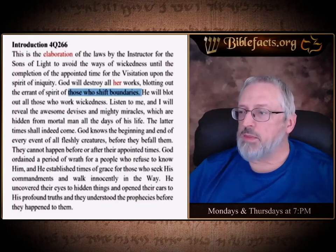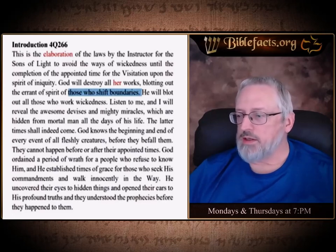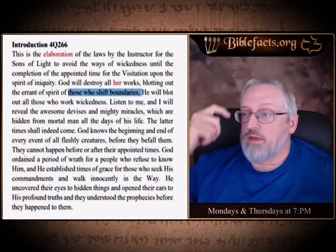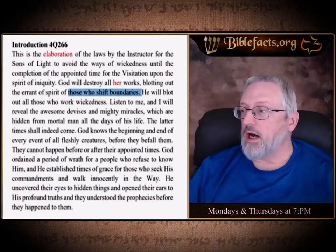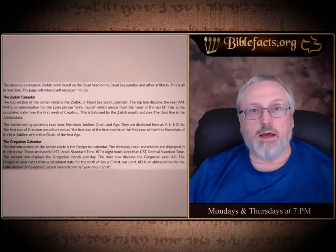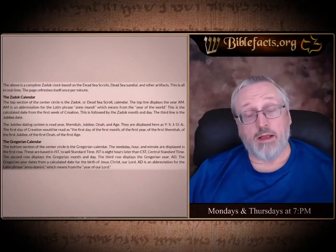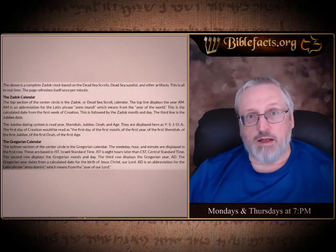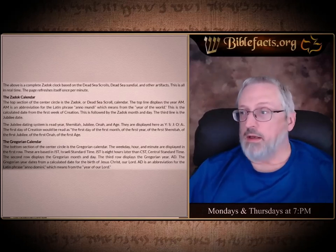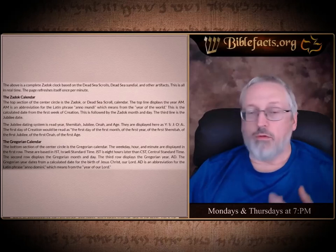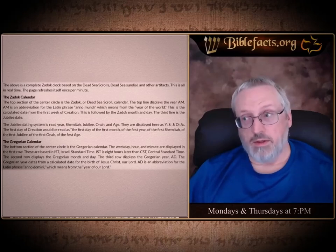The Zadok calendar, at the top, displays the year AM. AM is abbreviated for Anno Mundi — it means 'from creation.' So if this calendar is right, it's been 5,946 years since creation.